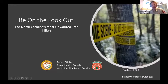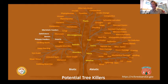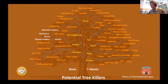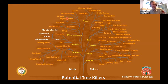I'm Rob Trickle. We're going to talk about being on the lookout for some of the most unwanted trees that affect our forest. Being in forest health, we deal with a lot of different things that affect our forest — things that are trying to hurt or kill our trees. Some of them are biotic, meaning they're living things, and others are abiotic, meaning they are not living. On the abiotic side you have weather, injuries, toxins, and soils. On the biotic side it's all the way from plants to microorganisms or pathogens, insects, and diseases.